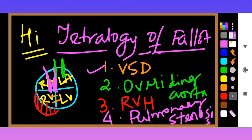So these are the four important things: number one is ventricular septal defect, which is a defect in the ventricular septum. Number two is overriding aorta — you can see in green I have marked it from the left ventricle, it is overriding. Number three is right ventricular hypertrophy.